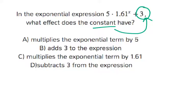A multiplies the exponential term by 5. That's actually referring to this 5 here, which is the coefficient, so we know it's not A. B adds 3 to the expression. That's looking pretty good. Probably describes our constant the best.